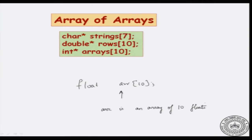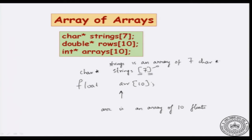If I have a more complicated declaration like char* strings, notice that the precedence for the square brackets is higher than the precedence for star. So this would actually be read as: strings is an array of 7 character stars. That is how it would be read because 7 would bind closer to strings. Strings will become an array of size 7, and it is of type character star. So you replace float with character star and it is roughly the same phenomenon.